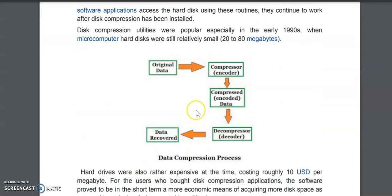Now let's see this picture. This is your original data, and this original data will be compressed by a compressor and stored on your hard disk. When you want to read that data, the compressed data will be passed to the software utility and it will be decompressed. You will get your original data with the help of a decoder, and then you can retrieve the data.